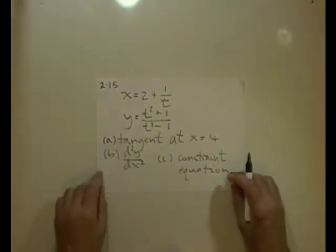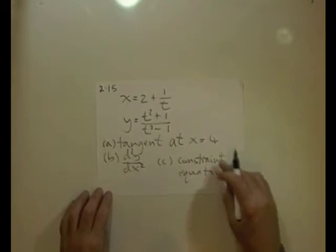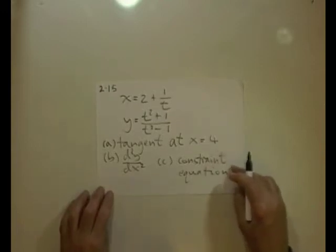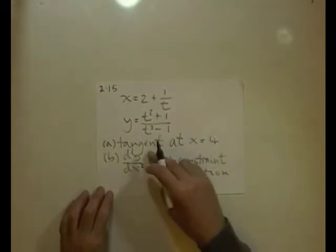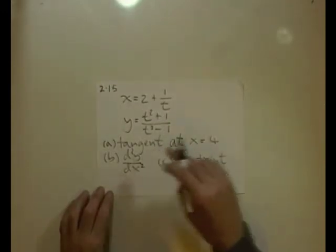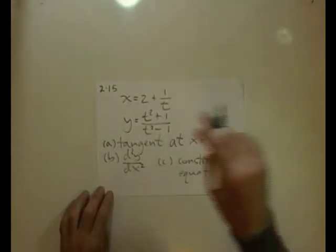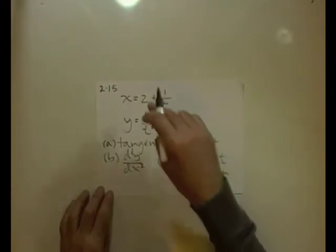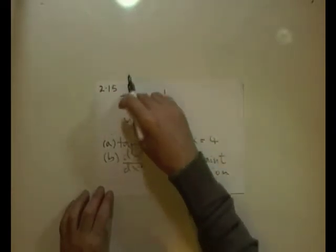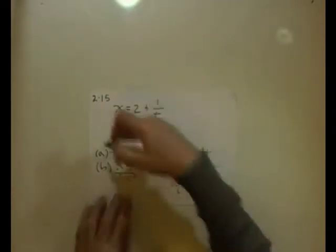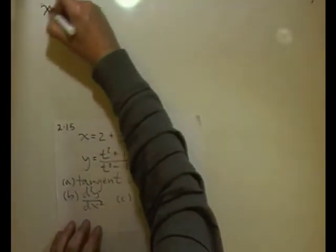The tangent is a straight line to the curve at a certain point. To get the equation of a line I'll need a point on it and its gradient. Its gradient will be dy/dx, so I'll need to differentiate these first of all.